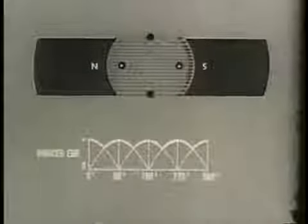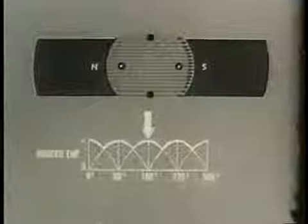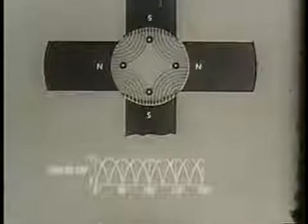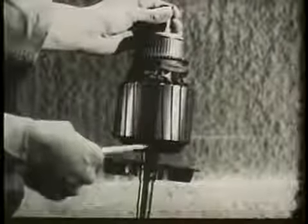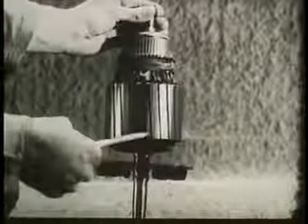However, even with two loops and four commutator segments, the rectified curve is still somewhat irregular. By adding magnets, we increase the number of fields cut by the armature. As we increase the number of loops and commutator segments, the variation between maximum and minimum value decreases — this tends to flatten the DC output. Practical DC generator armatures have a great many loops wound on a rotor, and the field is composed of many electromagnets. Together, these factors tend to create an almost pure DC output.